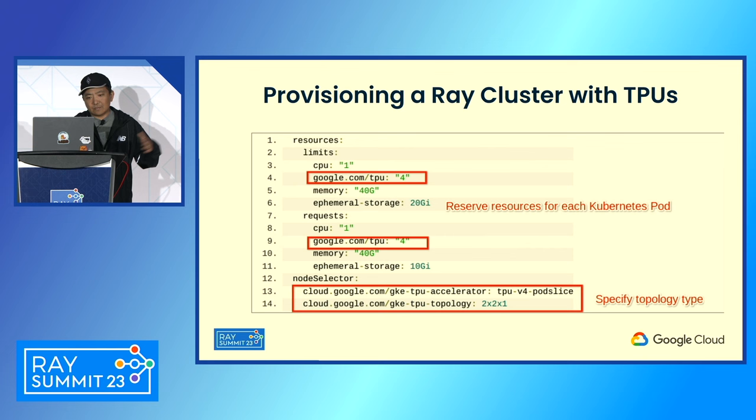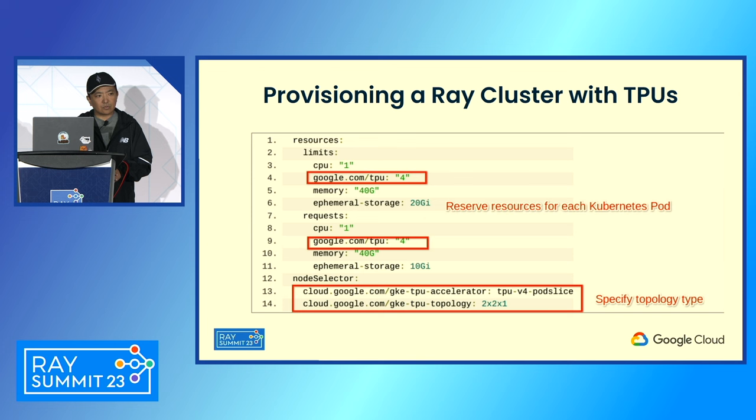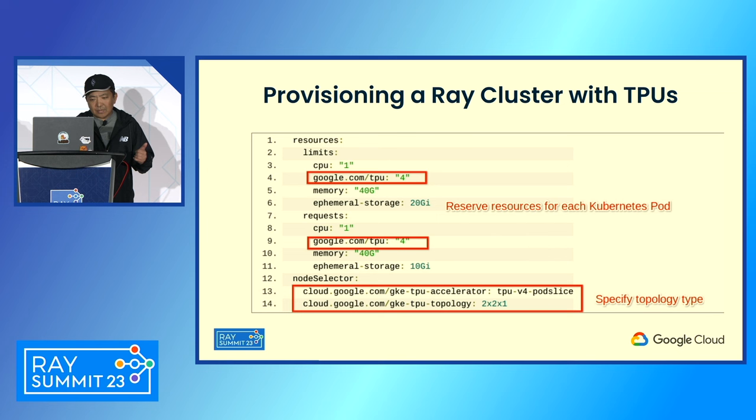Instead of reserving the number of GPUs, we just specify the number of TPU chips requested for each worker. And since we are deploying on a specific topology, we need to specify the topology type in the node selector. This ensures the workload gets scheduled on a node pool with the specified topology type as well as the accelerator type.